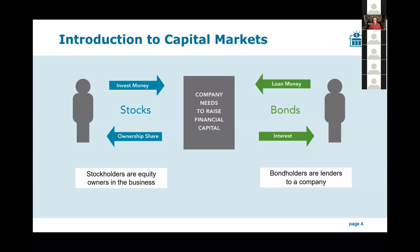They can sell equity in their business — selling off ownership in the company — or they can borrow money. So two polar opposite approaches: either selling off ownership or borrowing money without giving up any ownership. Investors are willing to supply capital to businesses in exchange for a positive expected return. This is why you earn returns — because you're supplying capital to businesses and taking risk by doing so. When a company raises equity capital, the investor gets shares or stocks.